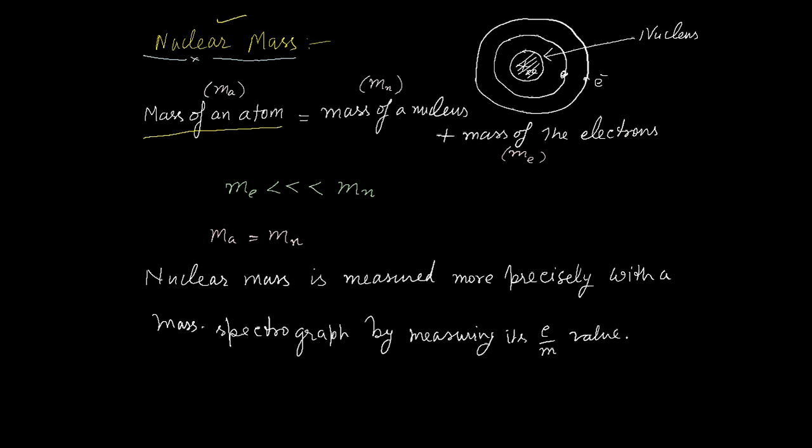The mass of an atom is the sum of the mass of the nucleus, represented by Mn, and the total number of electrons which revolve around the nucleus. Mn is the mass of the nucleus, Me is the mass of the electrons.